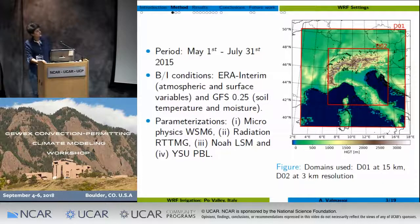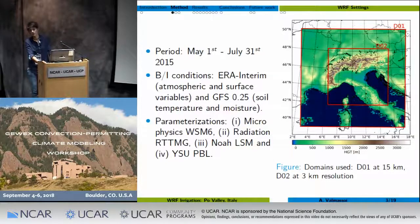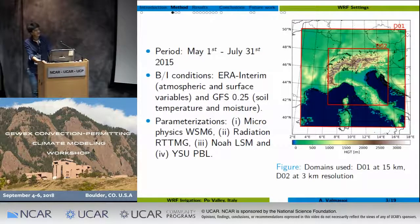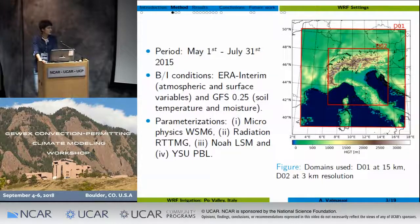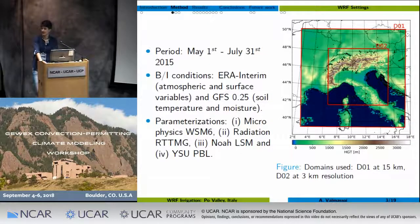I'm using WRF to assess the impact of irrigation. I ran three months of 2015, which included a heat wave in the latest part of the simulation. I use ERA-Interim for the atmosphere and surface variables as boundary conditions, and GFS for soil boundary conditions. I found that the microphysics parametrization doesn't impact precipitation much during the heat wave, so I chose WSM6, and I'm using NOAH LSM.